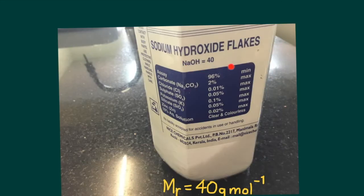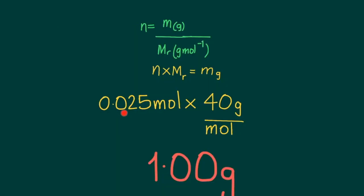The student then used this information. The relative formula mass of sodium hydroxide is 40g per mole. So, the mass of 0.025 moles, which is what is required, would be 1g.